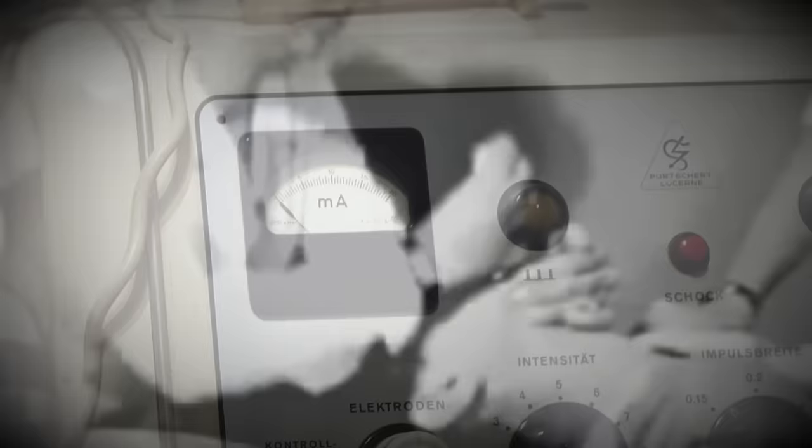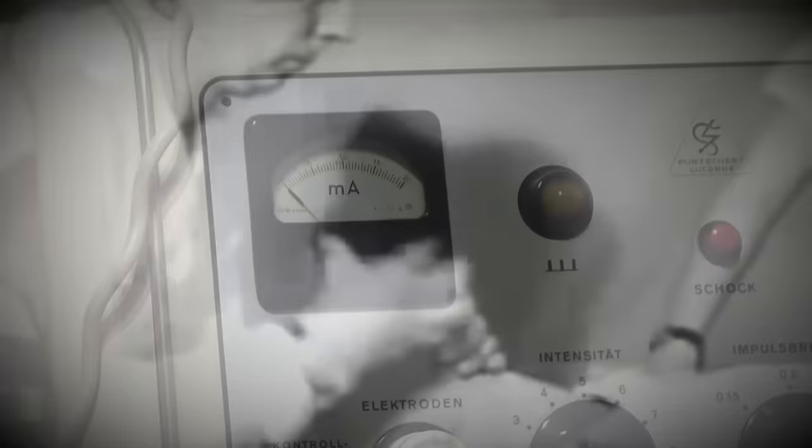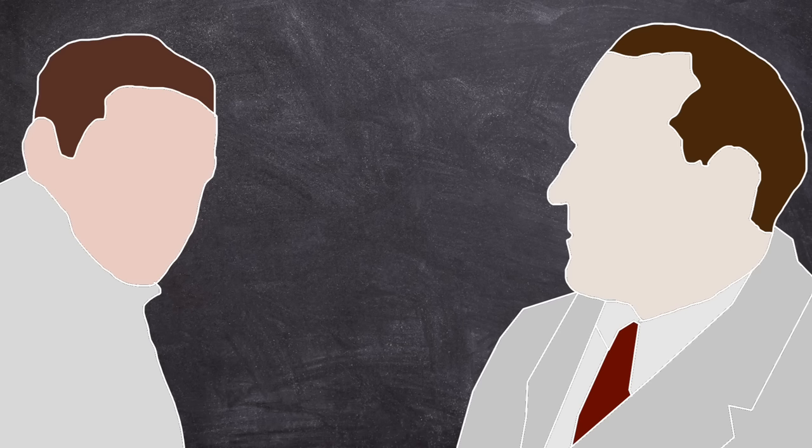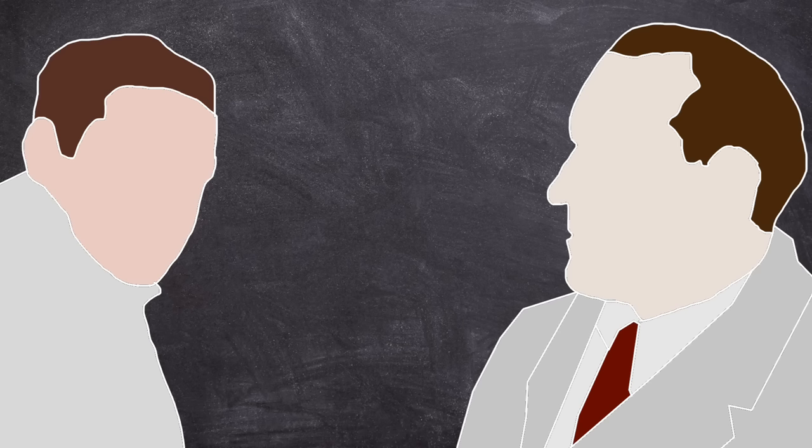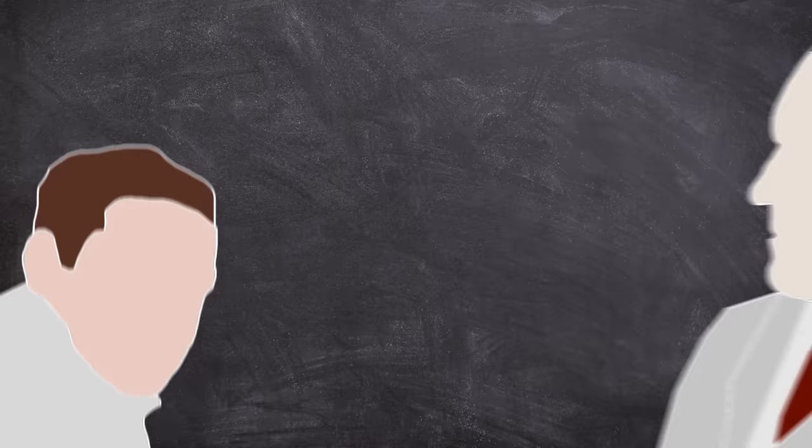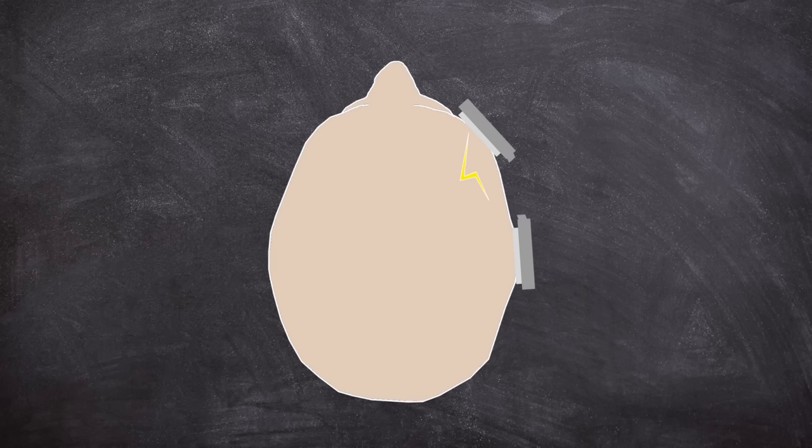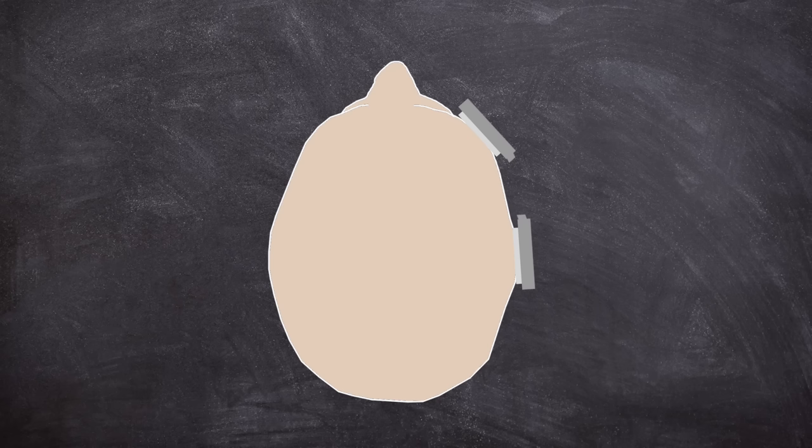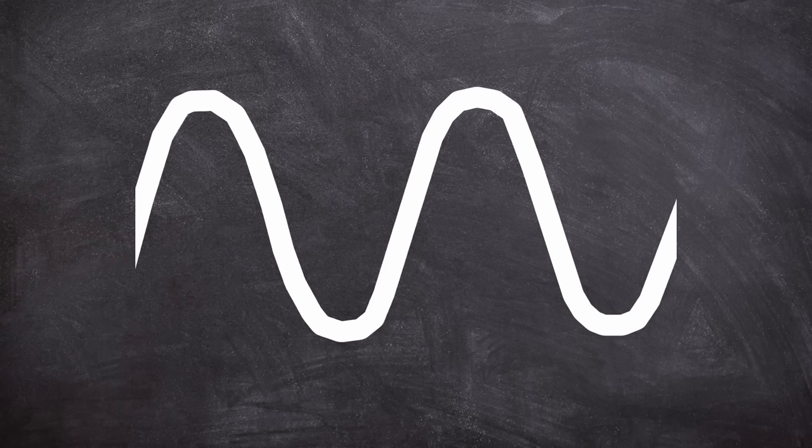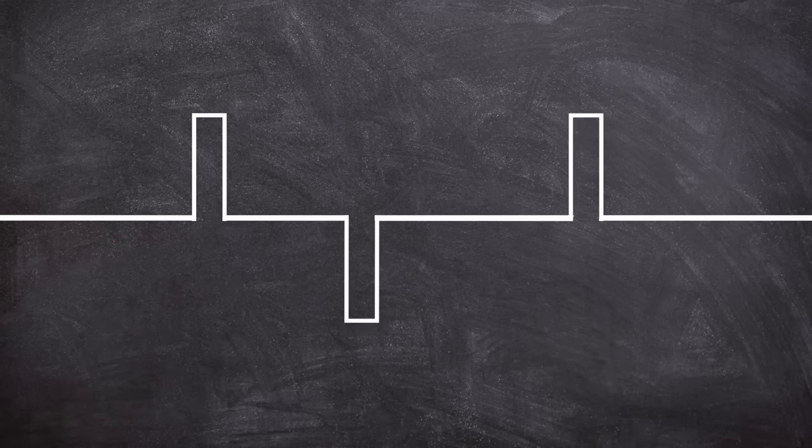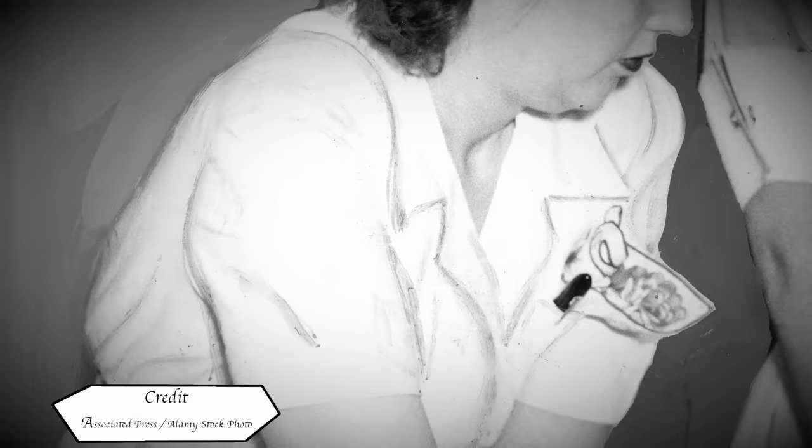In its original form, ECT had issues with the side effects of memory disturbance beyond the beneficial short-term amnesia and confusion. As such, Bini and Cerletti experimented with their method and changed it up to use a unilateral electrode placement, in that only one side of the head would be wired up, meaning the current would only pass through a portion of the brain and not the whole thing. Another change was a step away from using sine waves to a short pulse wave.